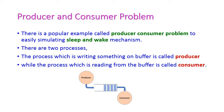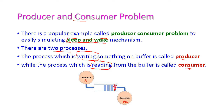The producer and consumer problem is a very popular example for sleep and wake-up. Here we also have two processes: the first is the producer, which writes something to the buffer, and the second is the consumer, which reads something from the buffer. Every time the producer writes something, the count is incremented, and every time the consumer reads something, the count is decremented.